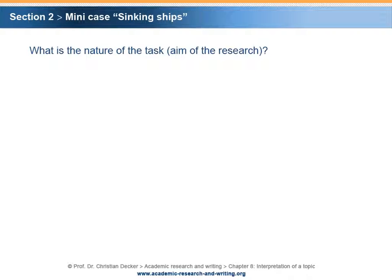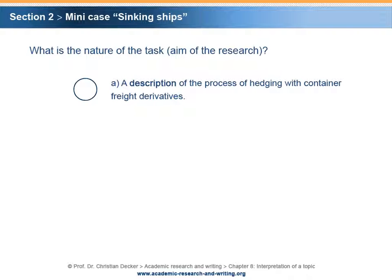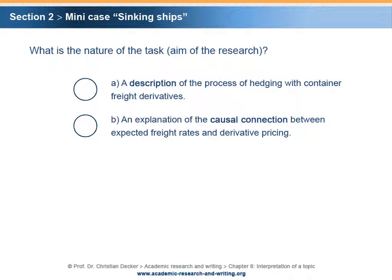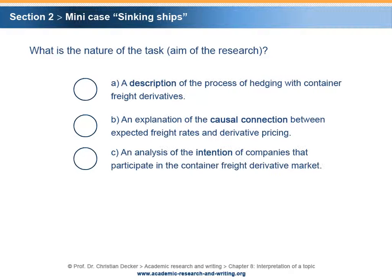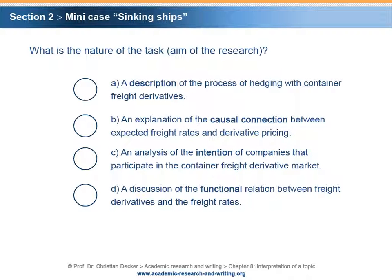What is the nature of the task or aim of the research? A. A description of the process of hedging with container freight derivatives. B. An explanation of the causal connection between expected freight rates and derivative pricing. C. An analysis of the intention of companies that participate in the container freight derivative market. D. A discussion of the functional relation between freight derivatives and the freight rates. E. A comparison of situations with and without hedging.